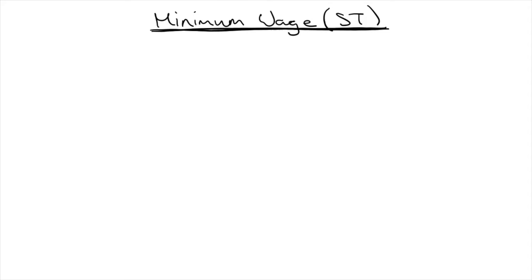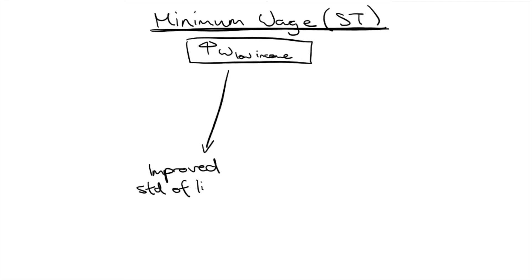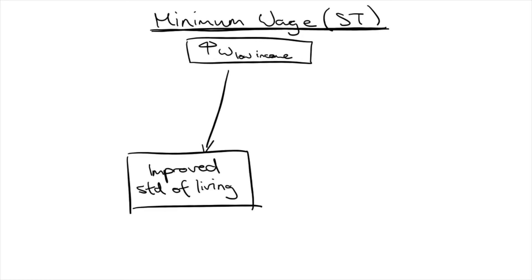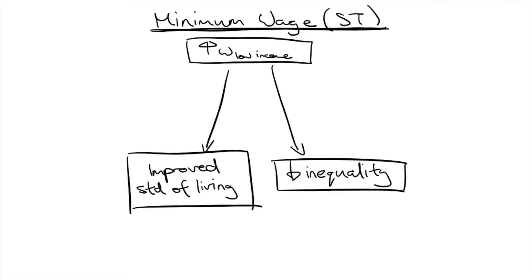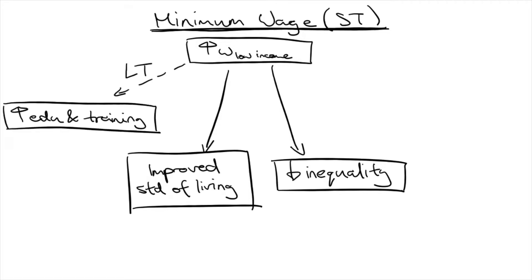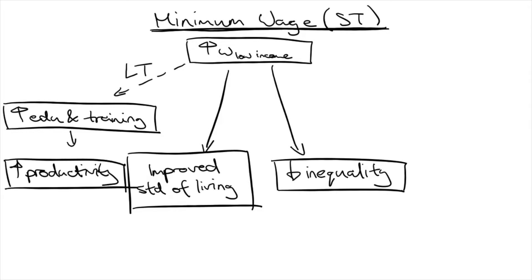Let's start with talking about why minimum wages exist in the first place. They aim to increase the wages of low-income workers, raise their living standards and lessen income inequality. These can flow on into long-term benefits as these low-income earners would be able to better afford education and training, leading to improvements in productivity, standards of living and lessened income inequality in the long term.